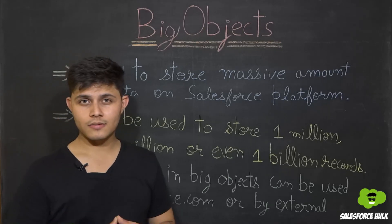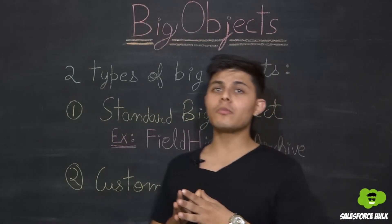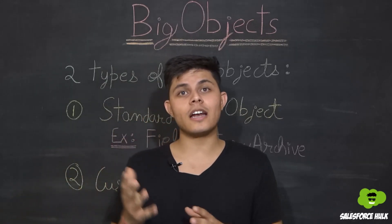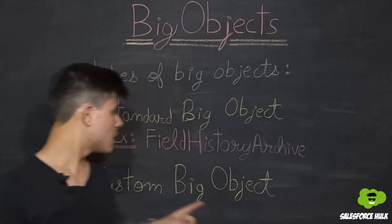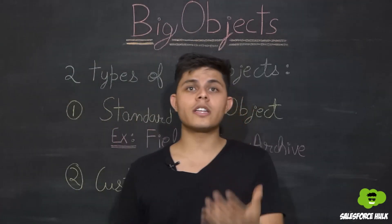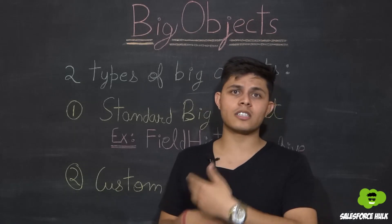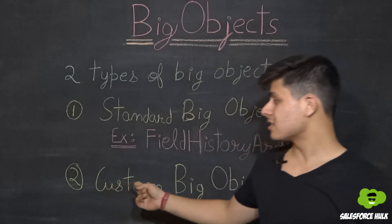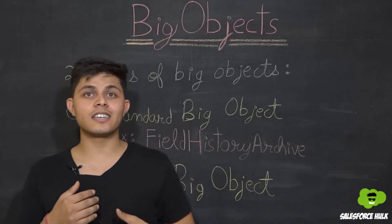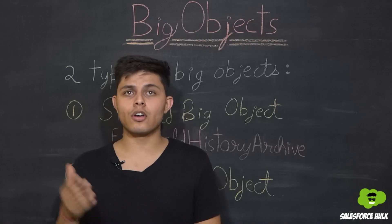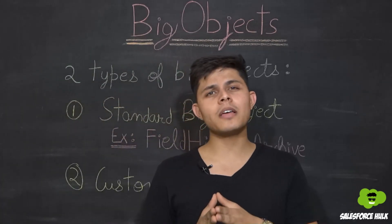Big objects are divided into two types: standard big objects and custom big objects. Standard big objects are already created by Salesforce and are included with Salesforce products. Custom big objects are the ones you create to store information unique to your org. Whatever big object is already there in Salesforce, created by Salesforce and coming by default with its products, is considered a standard big object.